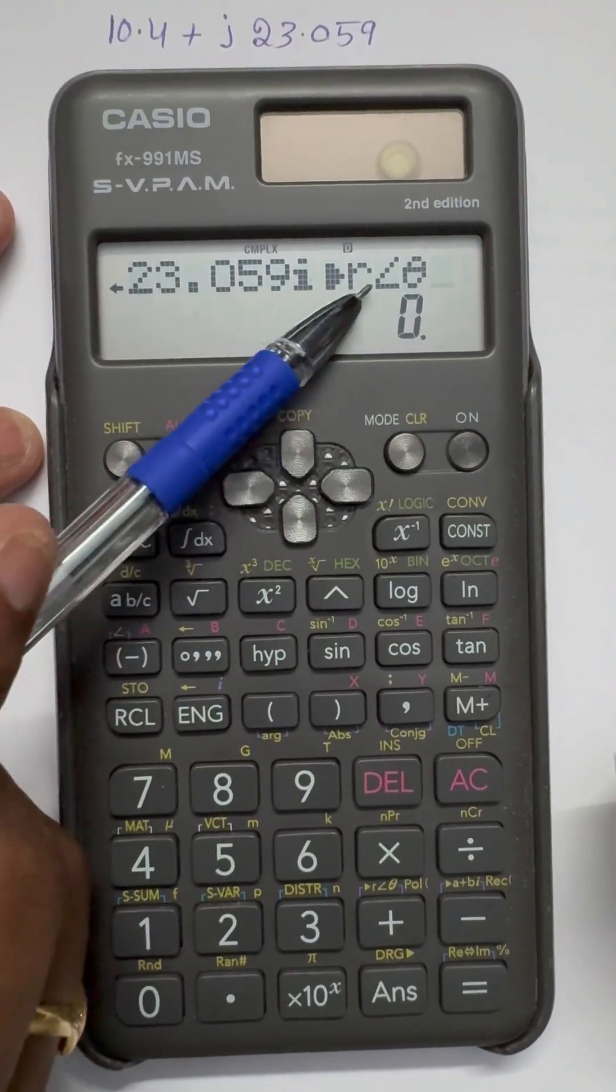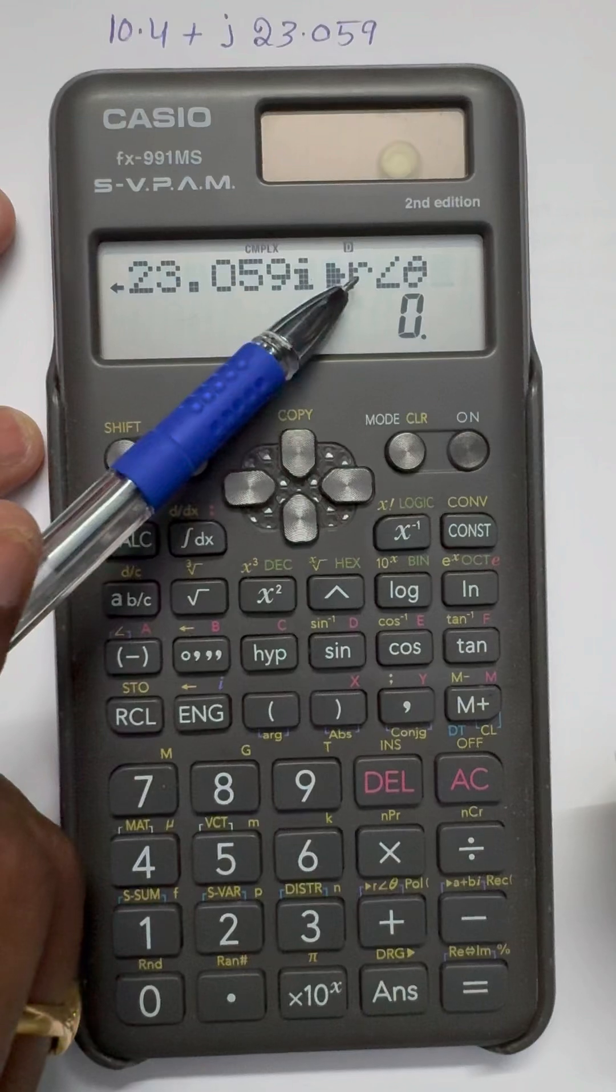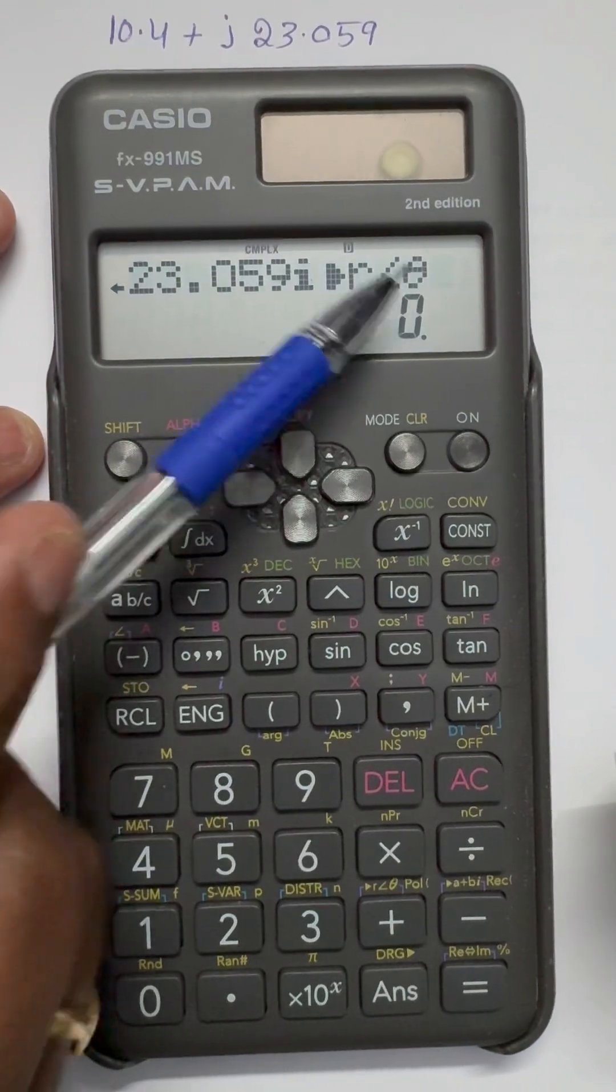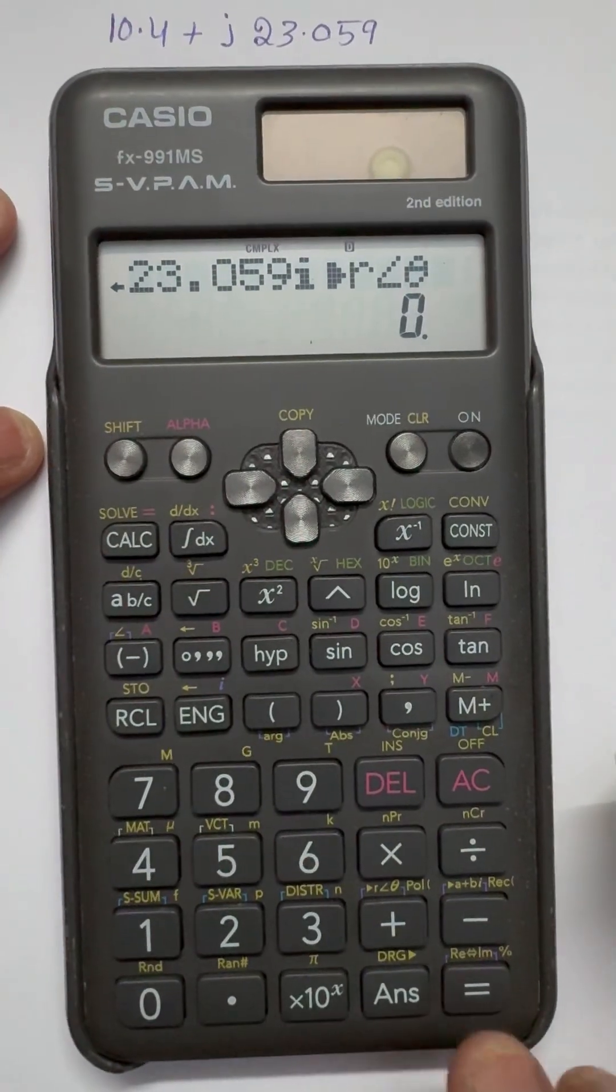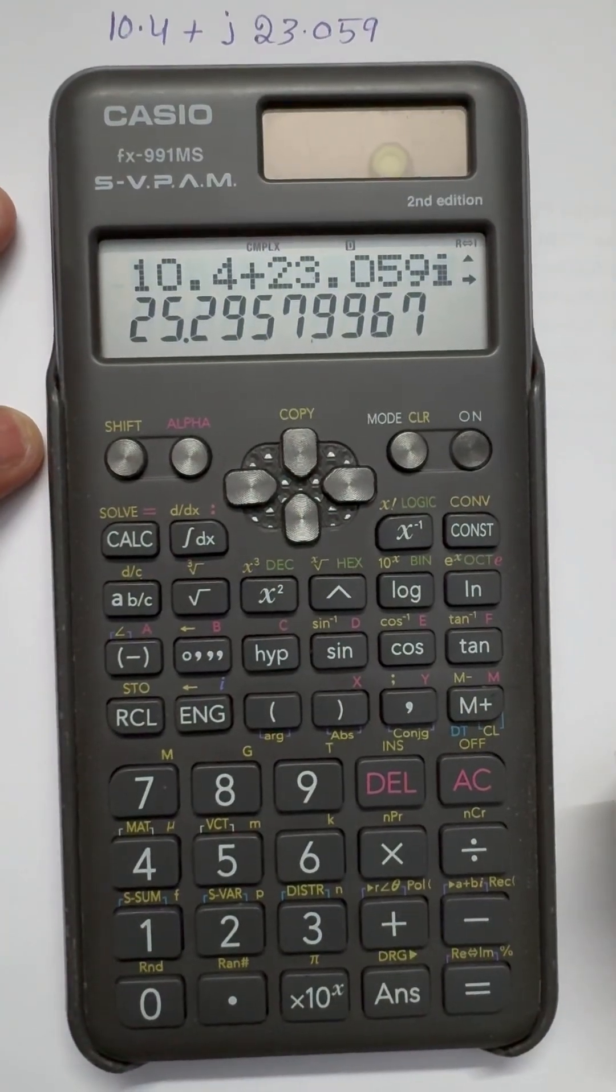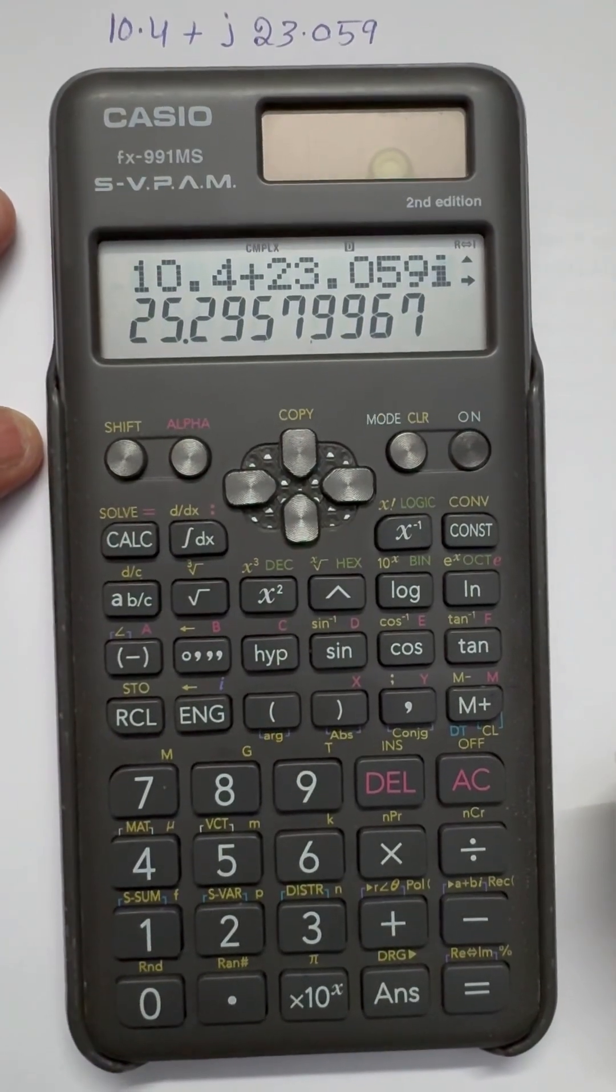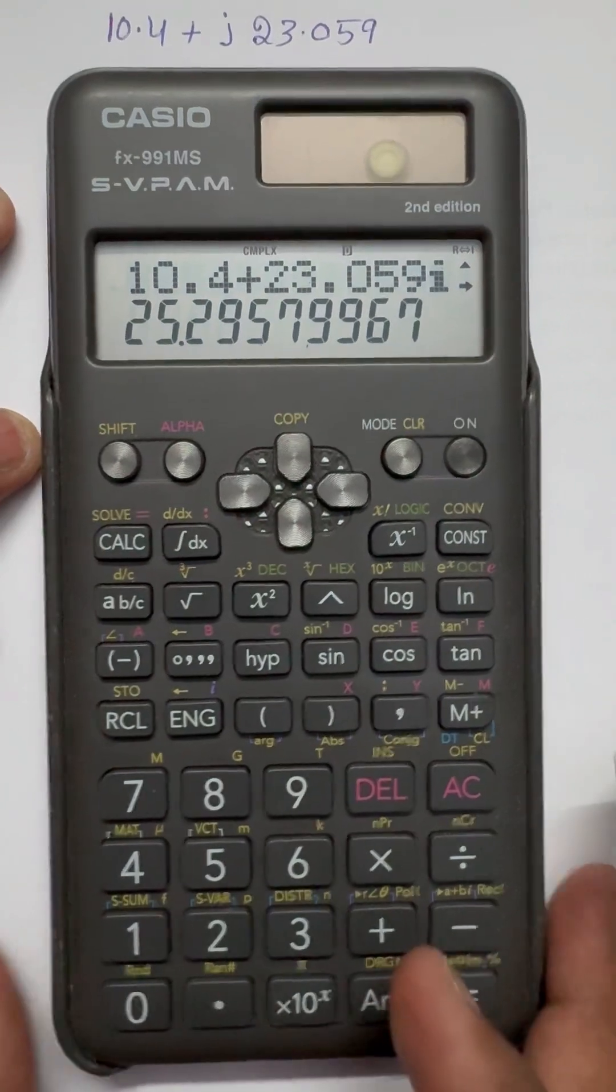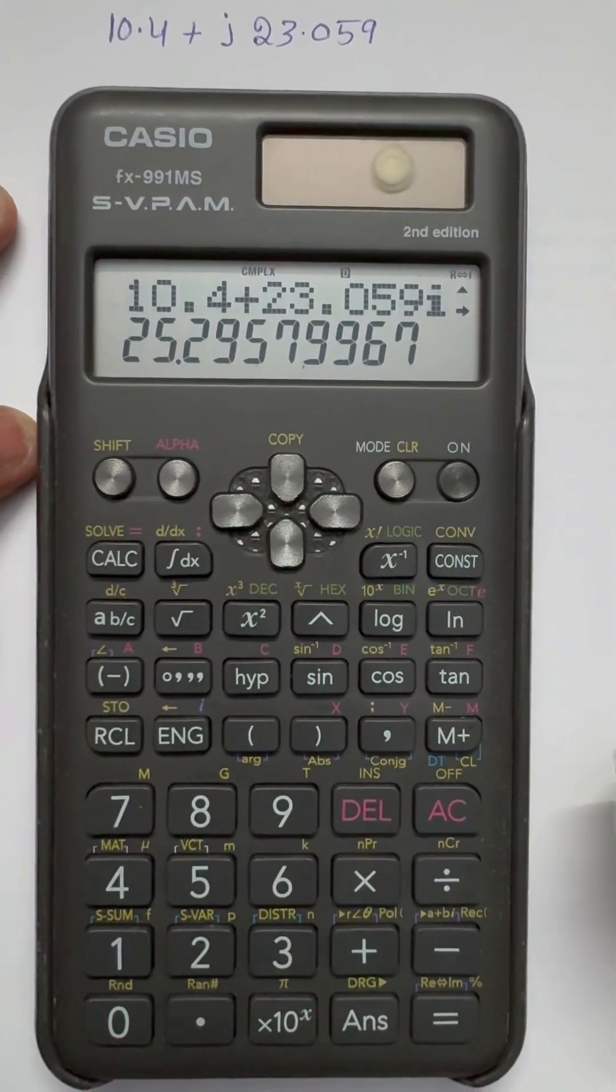That means when this value will be changed, magnitude and an angle. To get that, press equal to. That means 25.29. So here the value is 25.29.